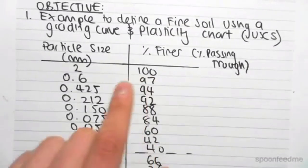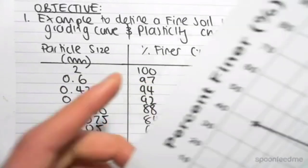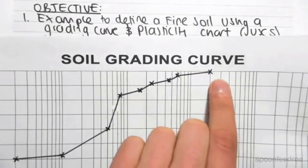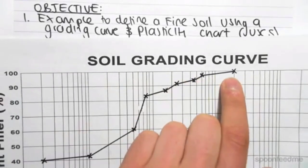We had particle size 2 millimeters, and we had 100% finer. So all I did was I went to 2 millimeters, and I went up to 100% finer, and I drew a little cross.